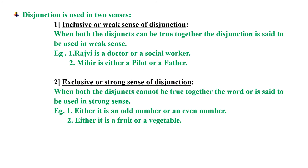Now we come to the strong sense or exclusive sense of disjunction. When both the disjuncts cannot be true together, the word or is said to be used in strong sense. So when we affirm one, we have to deny the other disjunct. In that case, disjunction will be used in strong sense and the word either...or will be used in strong sense.